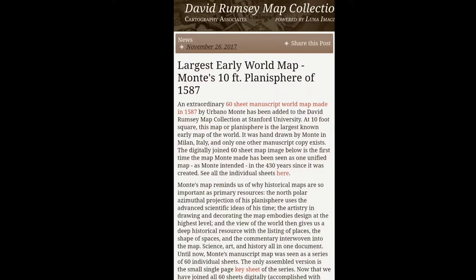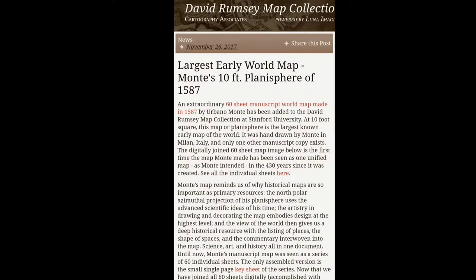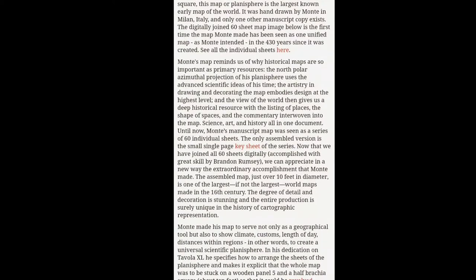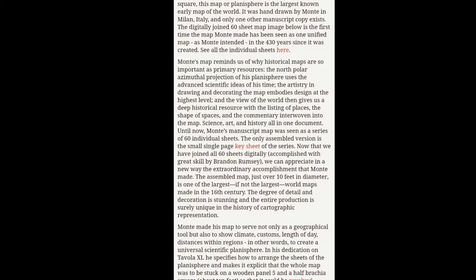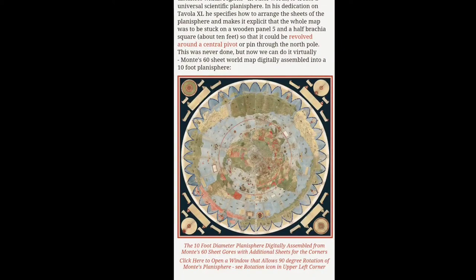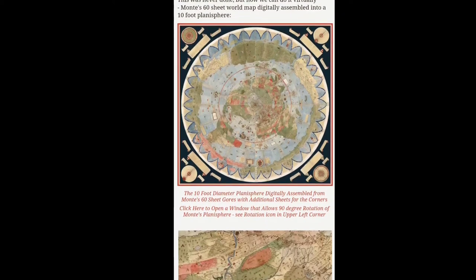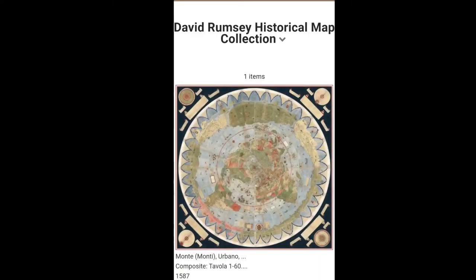Right here we have a map made in 1587, from the David Rumsey Map Collection at Stanford University. It's a 10-foot square map and it's one of the oldest maps we have in existence. We're going to take a look at this map and see what they saw 400 years ago when sailing across the globe.